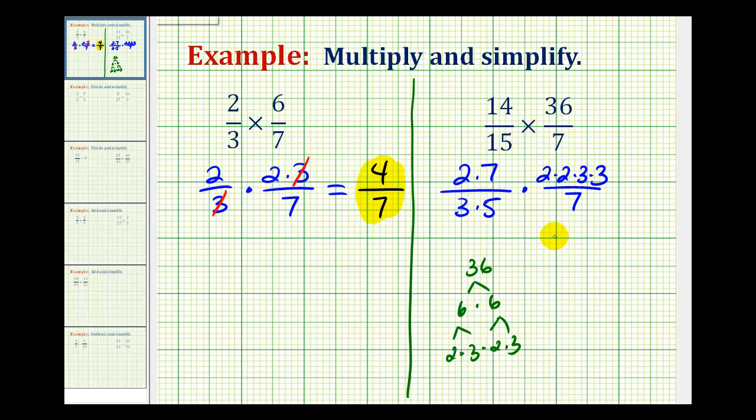So now let's simplify. Here we have a 3 over a 3, and here we have a 7 over a 7. So all of those simplify to 1. Now let's go ahead and multiply. Our numerator is 2 times 2 times 2 times 3, and that would be 24. And our denominator is 5.